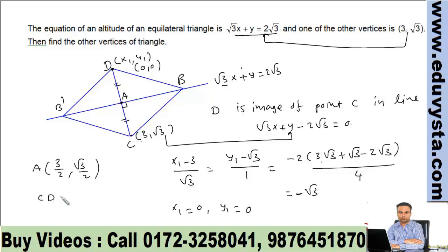Also, CD distance is equal to √(9 + 3) = 2√3. Can we get AB distance?